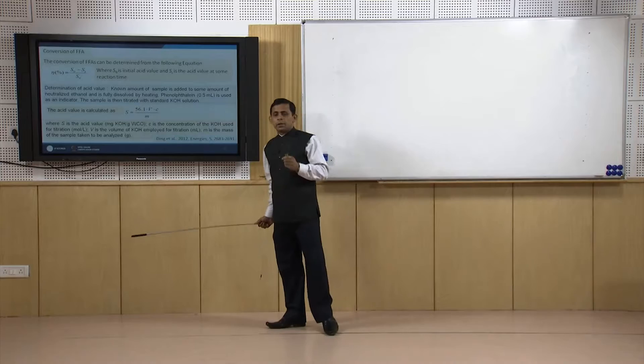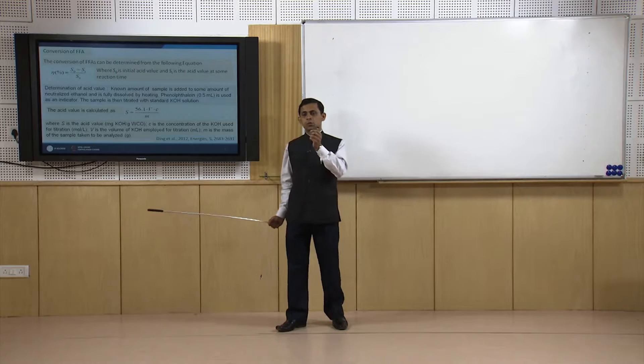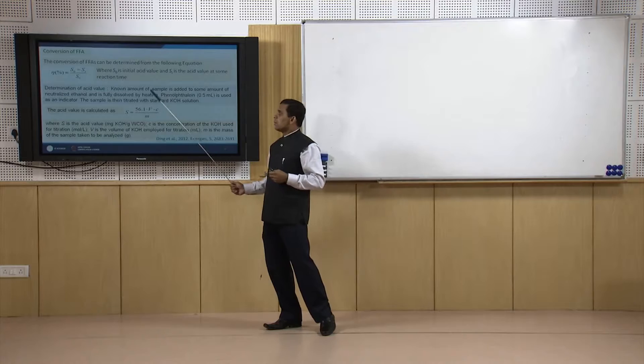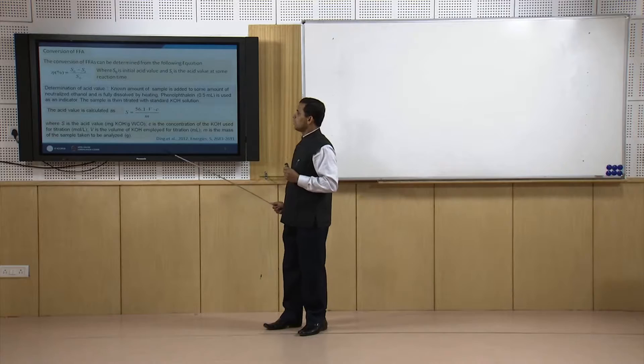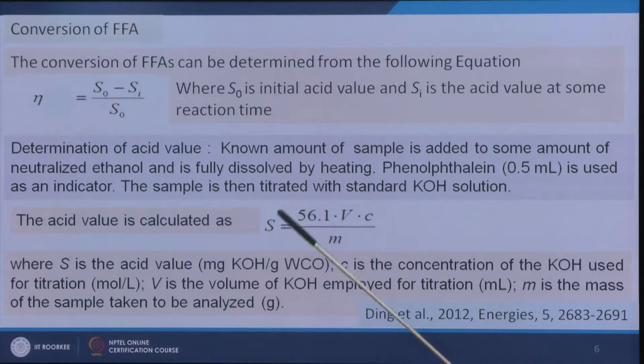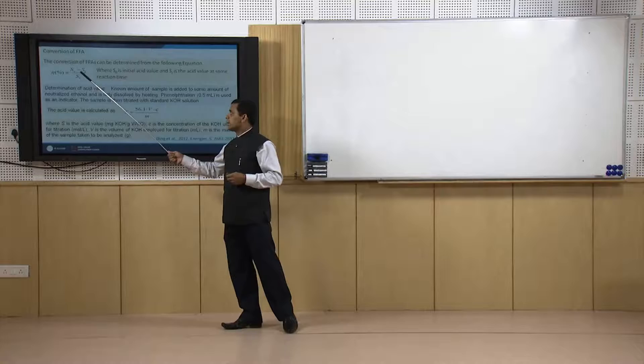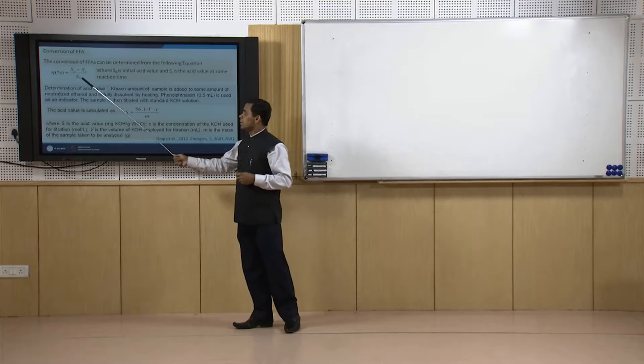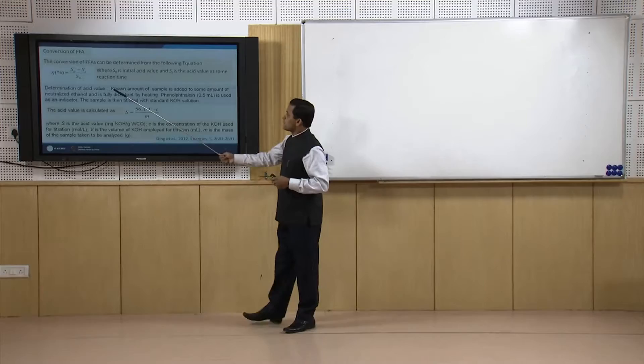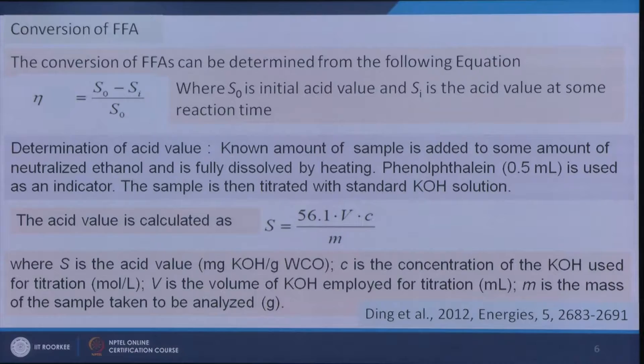The free fatty acid upper limit is mentioned as 2 to 4 percent, and we have to know the free acid concentration. The conversion of free fatty acids is calculated as (S₀ − Sᵢ) / S₀, where S₀ is the free acid content at the initial stage and Sᵢ is the acid content at any time t. This is the formula through which we can get the conversion of free fatty acids. S, the acid value, has to be known at the initial stage and after a certain time.